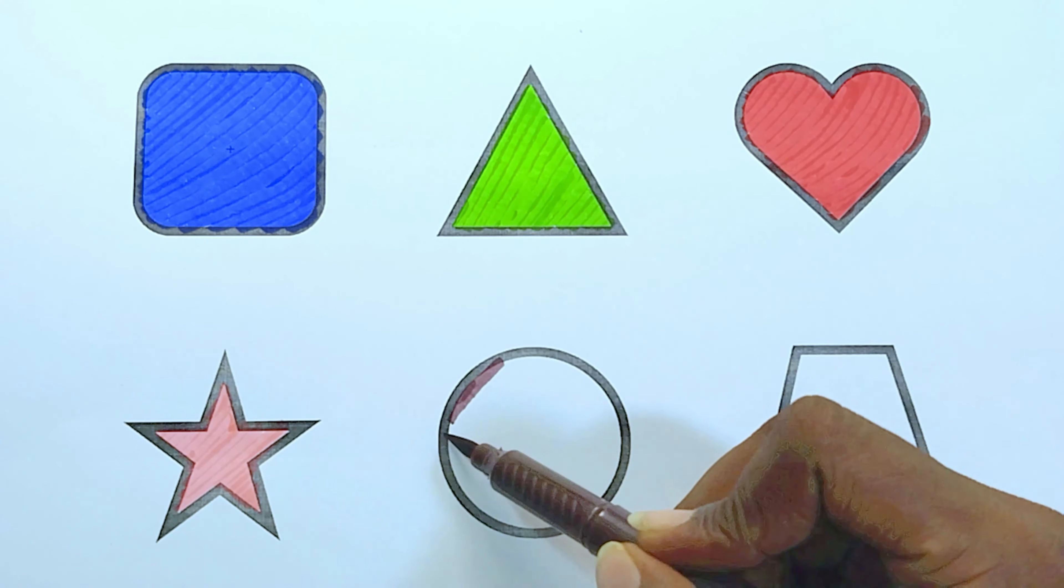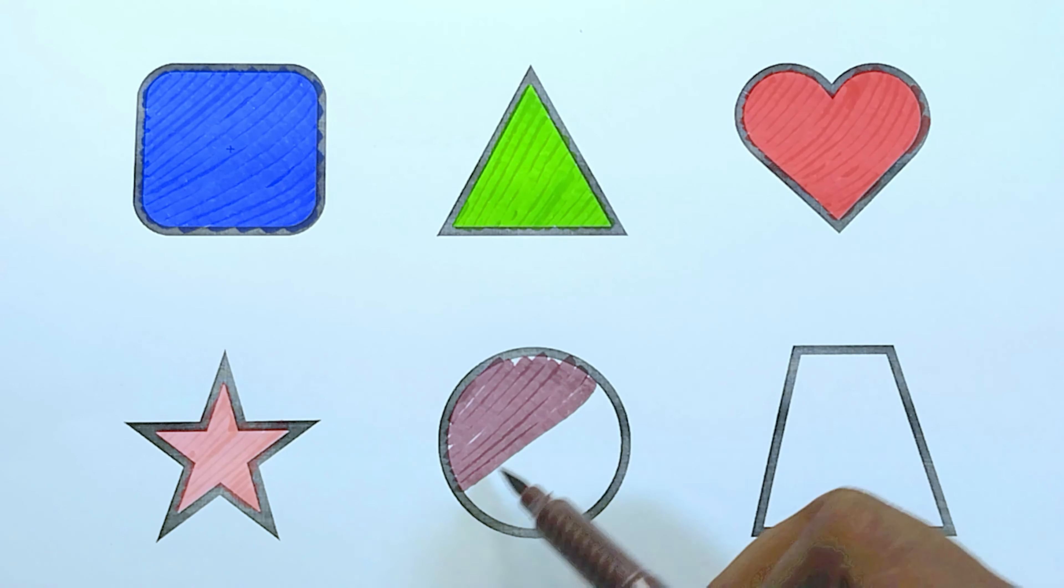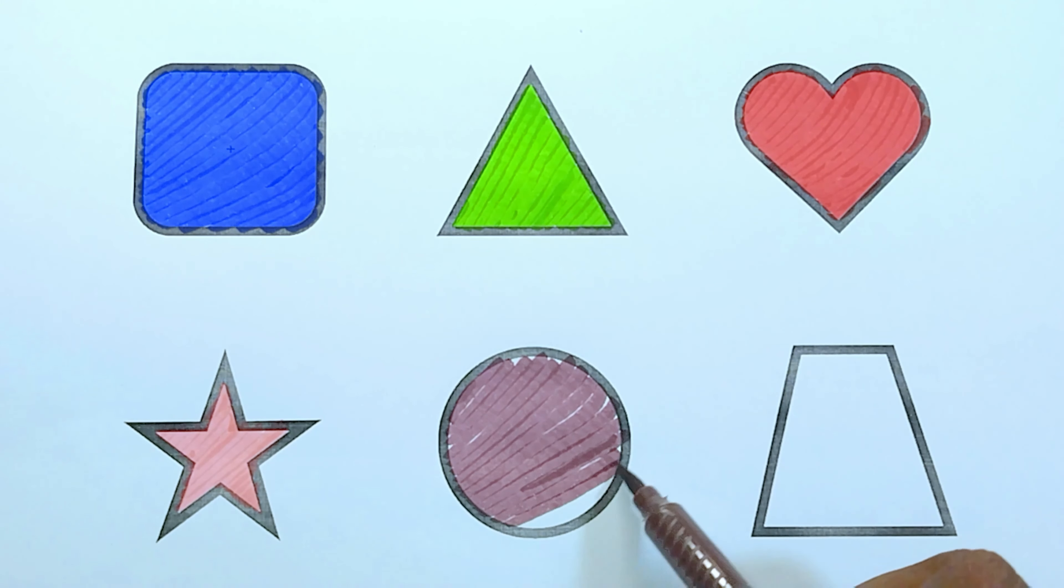Brown color, brown color circle. The shape is brown color circle.